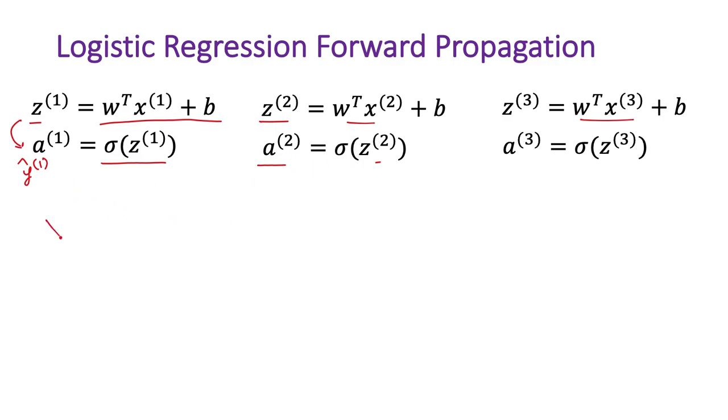First we will cluster the we will group the input values into the input values into a matrix. So this is the first input and this is a vector of size n cross 1 and then we stack with it X2 and so on. So we do it for all the m inputs. So this becomes n cross m vector. This is n and this is m.